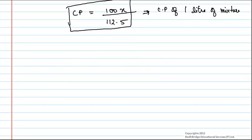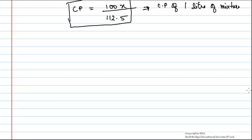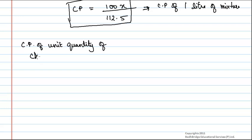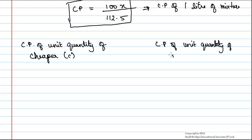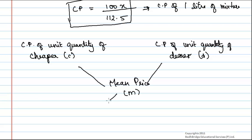Now, we have to use the rule of alligation. Alligation is a rule that enables us to find the ratio in which two or more ingredients at the given price must be mixed to produce a mixture of the desired price. We represent it as: cost price of unit quantity of cheaper (C), cost price of unit quantity of dearer (D), and mean price (M), from which we get D minus M and M minus C.